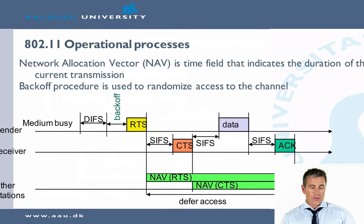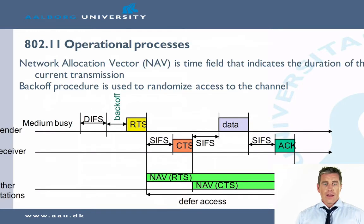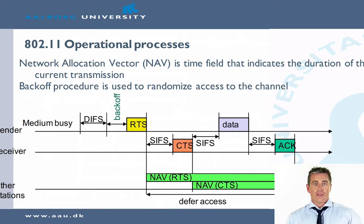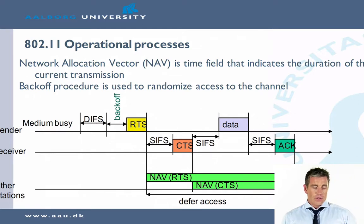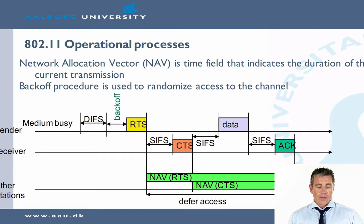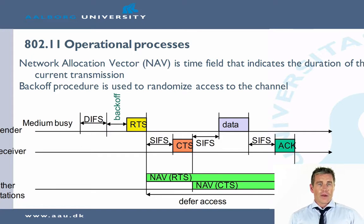Let's look at the operational processes by example. The network allocation vector is a time field which indicates the duration of the current transmission, and then we have a backoff procedure to randomize access to the channel. When the medium is busy, there is a DIFS time, and if we try to send something during this time we will be backing off — this backing off is a random time assignment — and when that has passed, the sender can send his request to send.